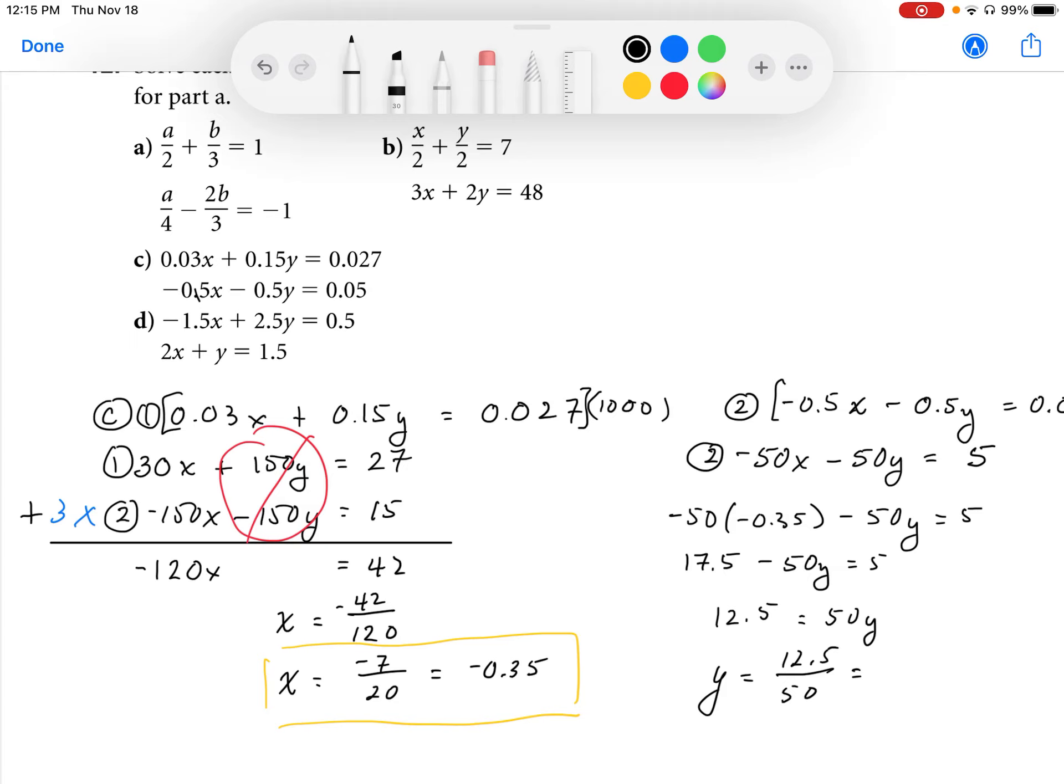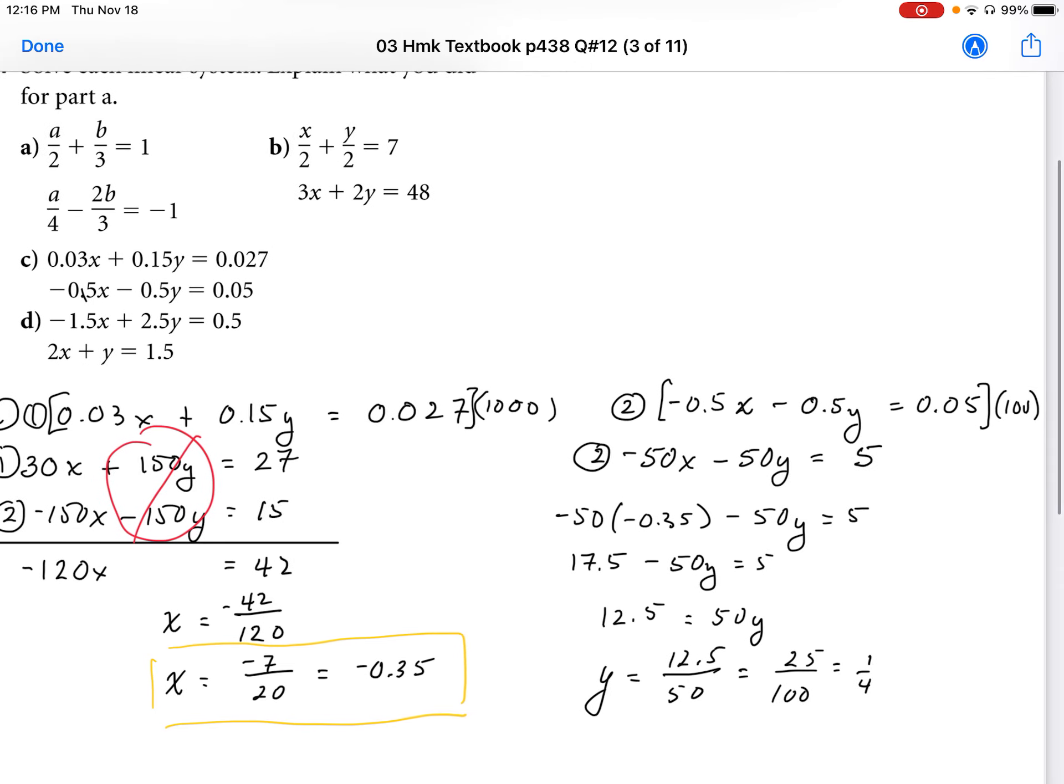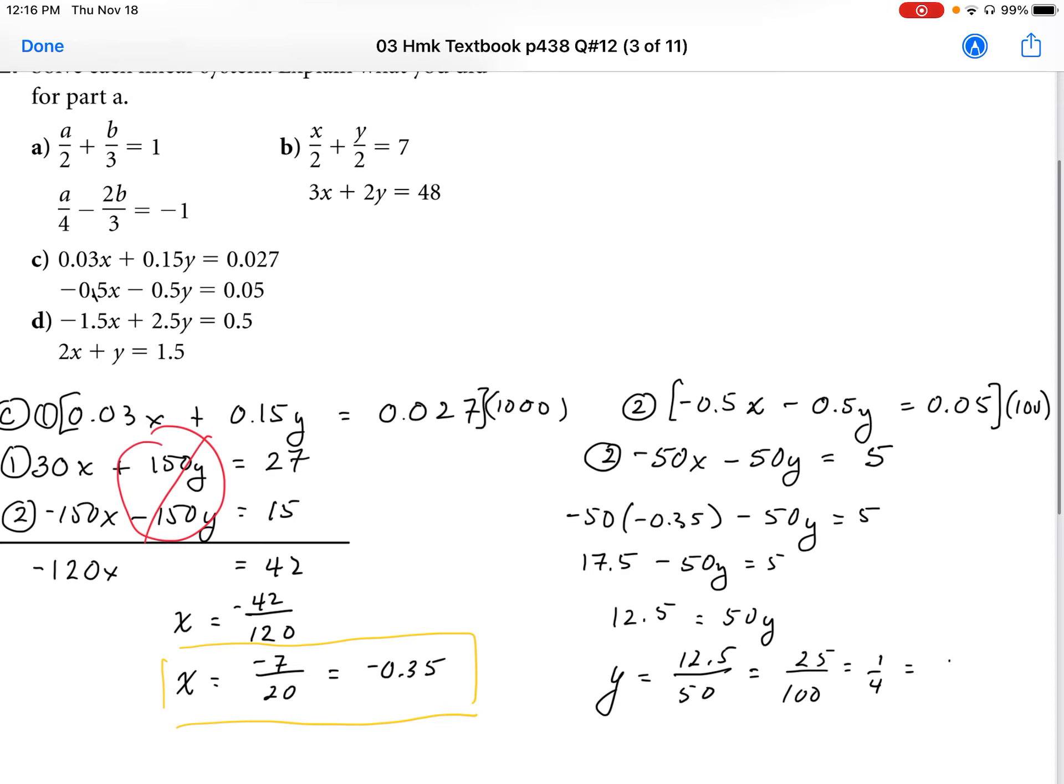And that works out to be, I can simplify that into, that looks like 25 over 100, which simplifies to 1 over 4. Or as a decimal, this would be 0.25, and that's positive 0.25. So then that represents the solution for y. So I've solved my system of equations.